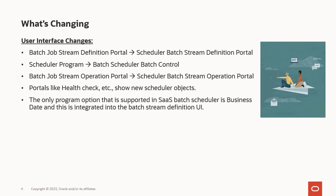For integration purposes, we had introduced program options like business date, debug mode, thread pool, thread notify, single submitter, and others. In the new scheduler, these are not supported. However, business date can be defined on the Scheduler Batch Stream Definition portal if required. Along similar lines, the renew publish option is also not required because the new SaaS scheduler is running within the cloud service foundation layer.